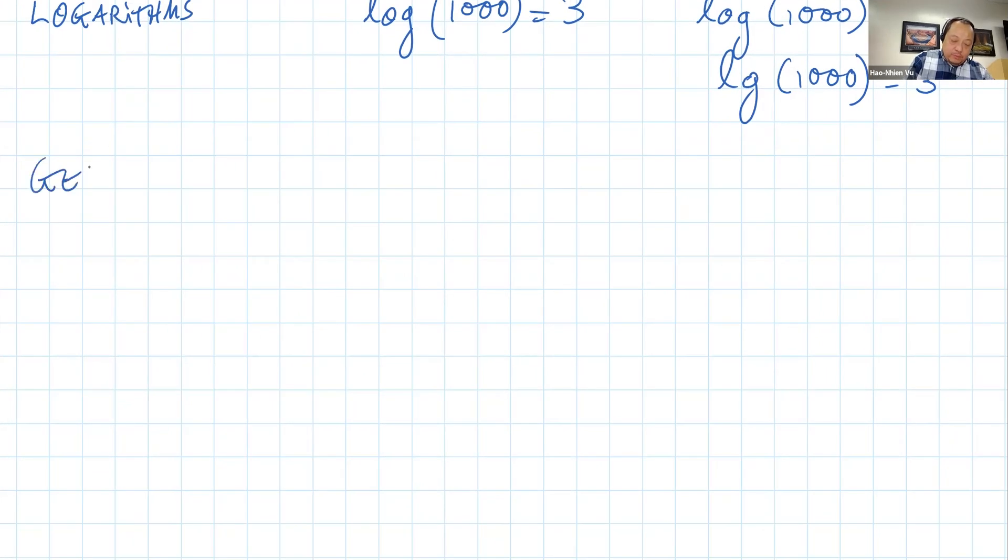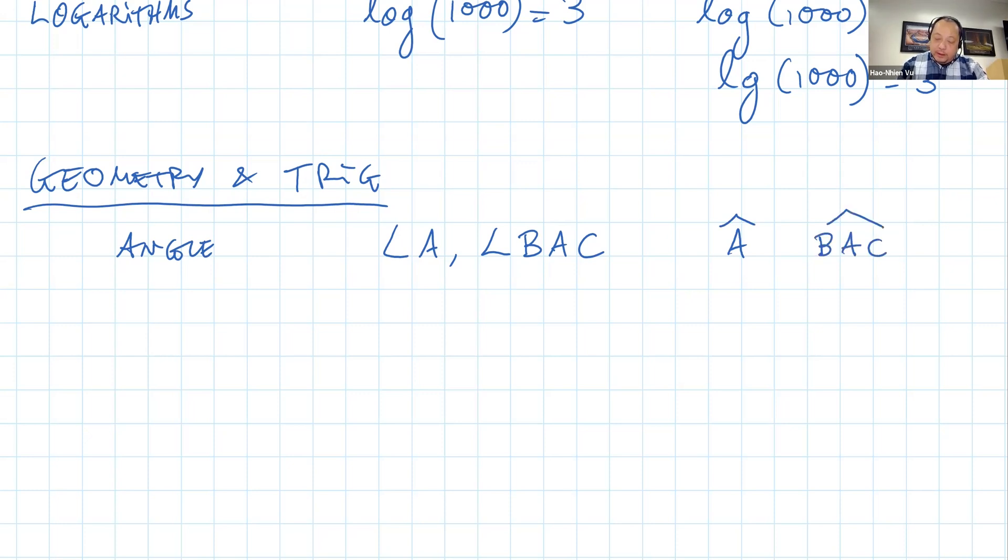Now moving on to geometry and trigonometry. And this is where there are a lot of differences. Symbols for angles. In the US, angle A is written like this. Angle BAC is written like this. In Vietnam, it's written with the hat on top. So it's Â and BÂC with the cap on top. And they both mean this angle here.